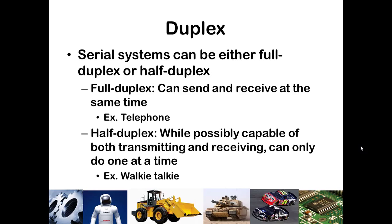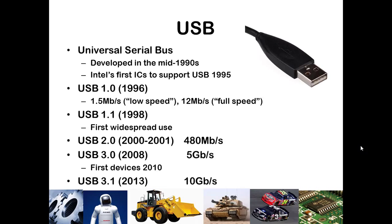The opposite of that is half duplex, where you can only send or receive at a time. You could be both a sender and a receiver, but you can only do one at a time. The example is a walkie-talkie or phones with the push-to-talk feature. This is generally what is used in early USB devices, but with the advent of USB 3.0, we now have full duplex capability with USB peripherals.